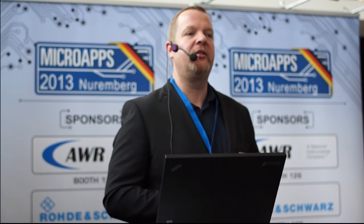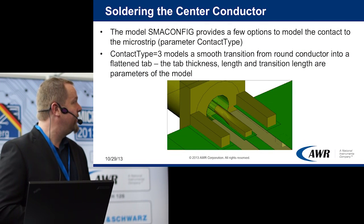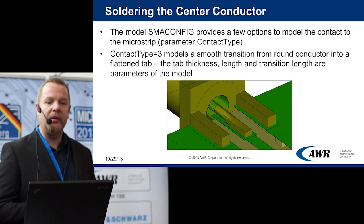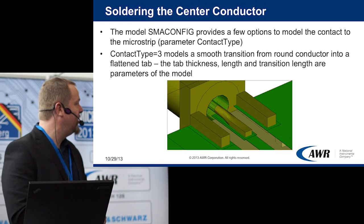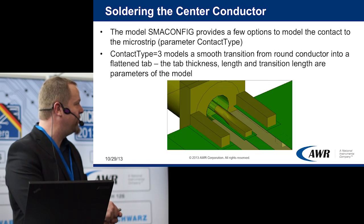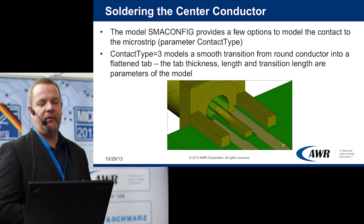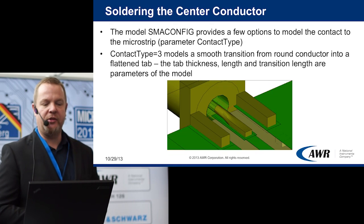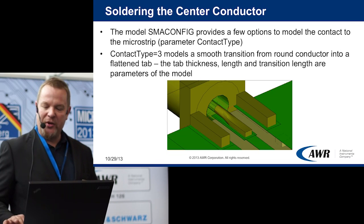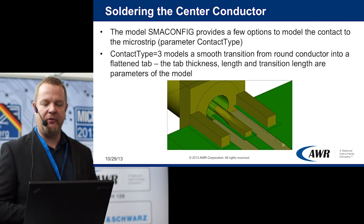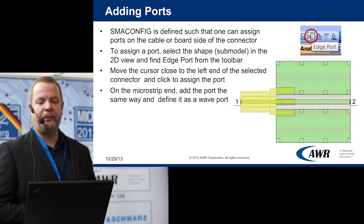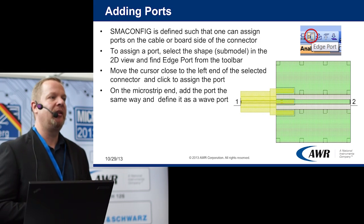There is one parameter of the SMA config that affects the center conductor soldering — we can transform the circular center conductor into a more flat shape, parameterizing the transition from the circular shape into the rectangular shape, and the thickness of the rectangular end. These are simple parameters of the model, and we can easily run experiments in simulation to see which parameters actually affect our results. Ports are added the same way as with any other objects in EM documents: select the shape and then assign a port.